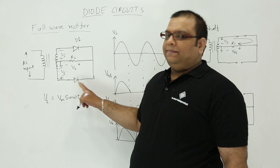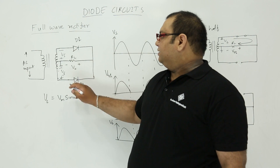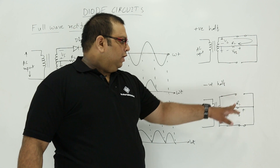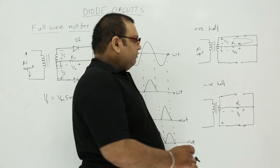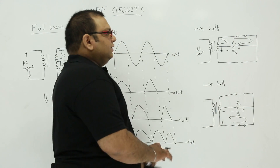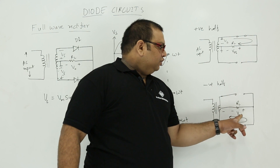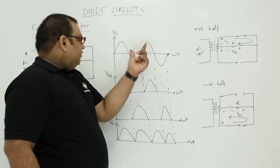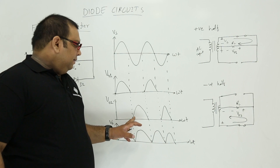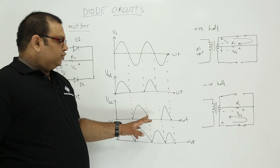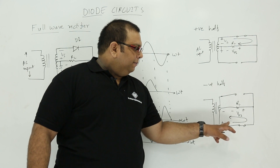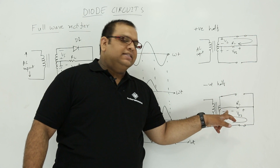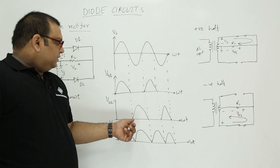When diode D2 is in the on state it starts conducting, while D1 is open circuit. The current flows through D2 to the load RL. In the equivalent circuit for the negative half, D1 is off and D2 is forward biased — short circuit. The current flows in the same direction through RL for both halves. So the voltage across RL has the same polarity for both positive and negative halves, since the current flows in the same direction through the resistance.